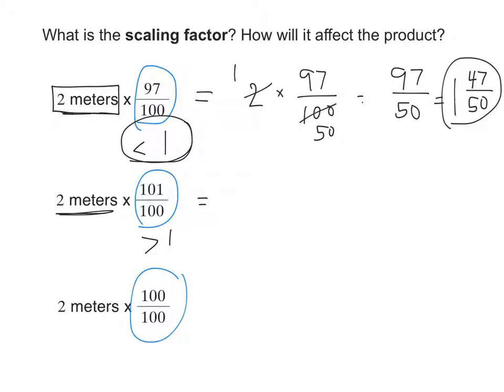Okay. So let's actually do the multiplication to see if our prediction is true. We have 2 times 101 over 100. We can, of course, simplify. 2 divided by 2 is 1. And 2 divided... Or sorry. 100 divided by 2 is 50. So my answer is 101 over 50. Or 2 and 1 50th.